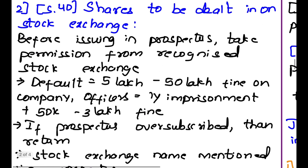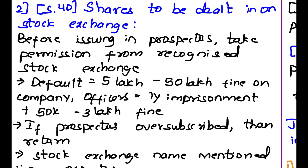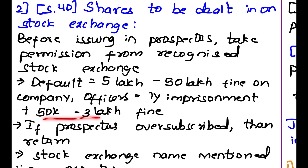If they don't take permission from a stock exchange and they issue a prospectus and sell shares, then they will be liable to a fine of Rs. 5 lakh to Rs. 50 lakh. Also, the officers will be liable to 1 year imprisonment plus a fine of Rs. 50,000 to Rs. 3 lakh.